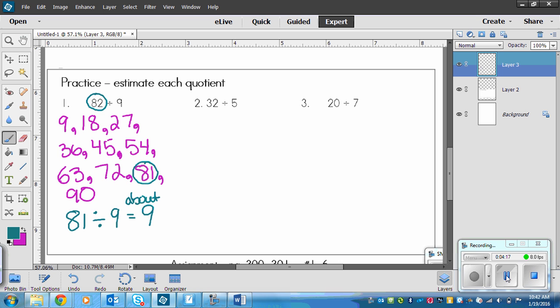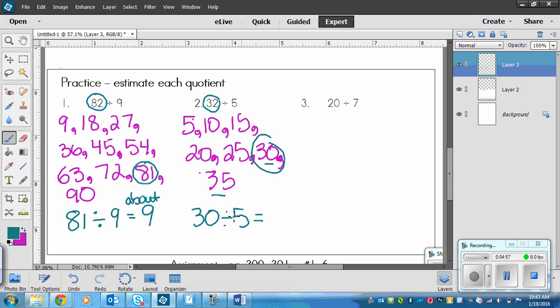Next one, write the multiples of 5. So here they are. And you'll notice that I made sure to do the next largest number after 32, just in case this number is closer to that larger one. So here are the multiples, 5, 10, 15, 20, 25, 30, 35. So which one is closer to 32? Is 30 closer or is 35 closer? Well, 32 is 2 away from 30 and 3 away from 35. So it would be closer to 30. So 32 divided by 5 is about the same as 30 divided by 5. And 5 times 6 equals 30. So it is about 6.